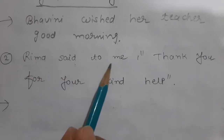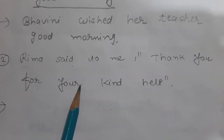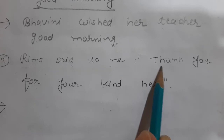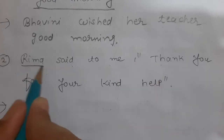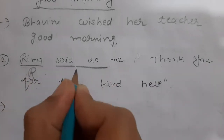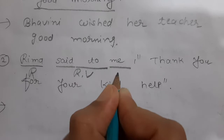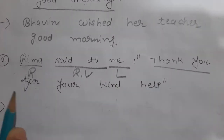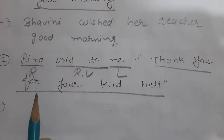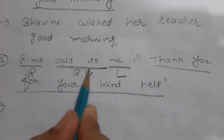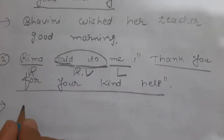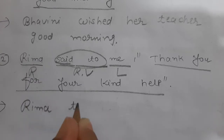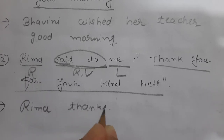Second example: Rima said to me, 'Thank you for your kind help.' Here, one is thanking someone. So Rima is the reporter, 'said to' is the reporting verb, and 'me' is the listener. In reported speech, one is thanking someone, so our reporting verb will be 'thanked.' Let's write: Rima thanked me.